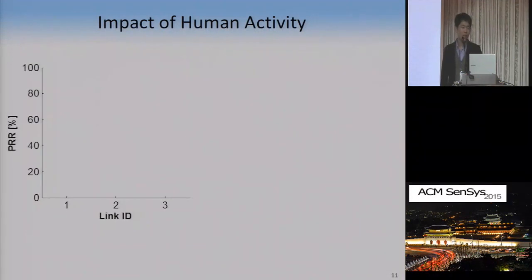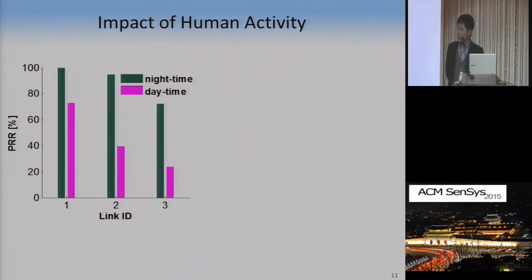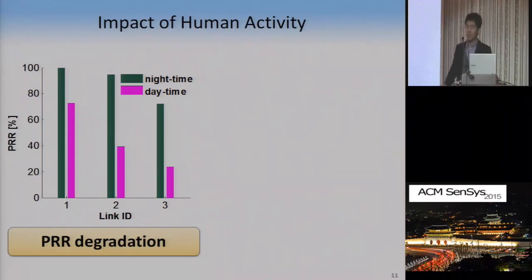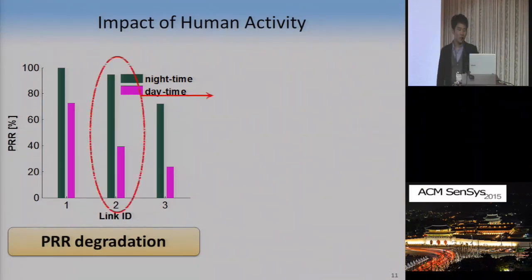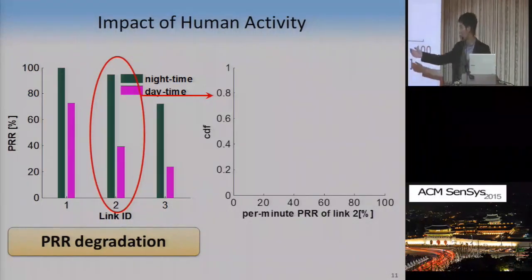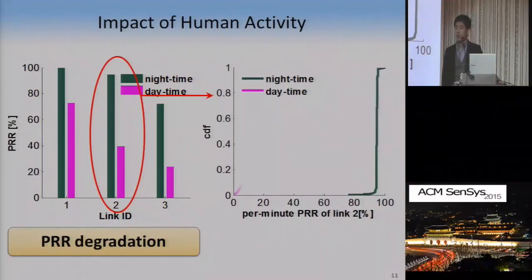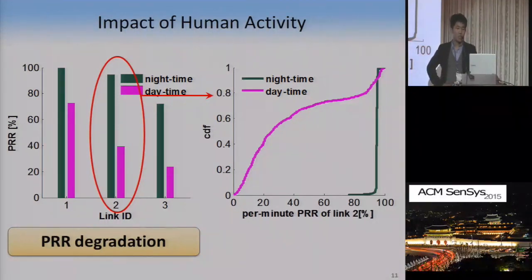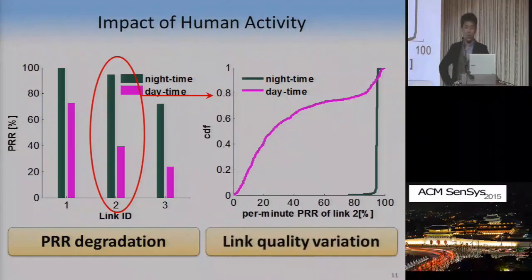First, let's look at the packet reception ratio of each link, for both daytime and nighttime. We can see that the daytime PLR is significantly worse than the nighttime one. The difference between day and night is obviously the presence of humans, so human activity degrades wireless performance severely. Looking at the cumulative density function for per-minute PLR of link 2, for both day and nighttime, the daytime PLR is not only worse but its CDF shape is totally different — it spans from 0 to 100%. So another impact of human activity is very severe link quality variation.